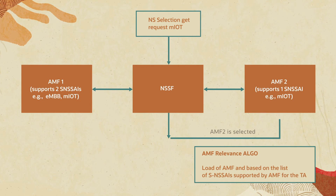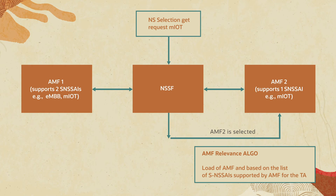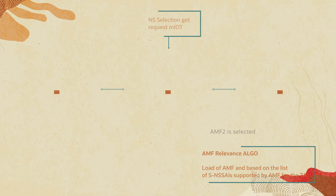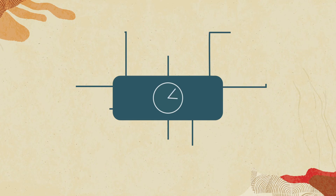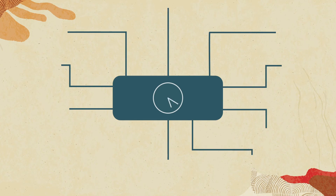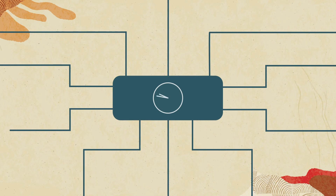OCNSSF has built-in intelligence which avoids overloading common AMF based on Oracle's proprietary relevance algorithm and performs traffic segregation, enhancing overall service quality. The real-world demand for network resources varies during different times of the day.